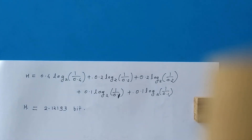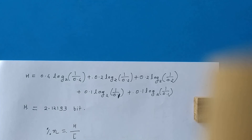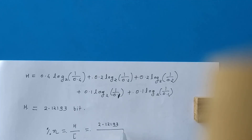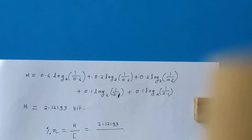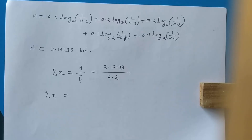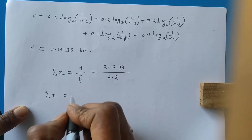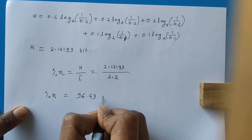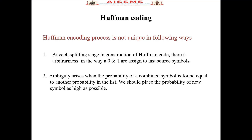If we find the percentage efficiency, it is H divided by L̄, which is 2.12193 divided by 2.2, so the efficiency comes out to be 96.43%. We have discussed Huffman coding and seen the numerical problem solved.